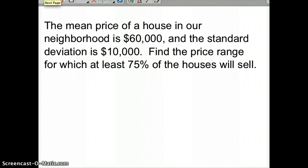The mean price of a house in our neighborhood is around $60,000, and the standard deviation is $10,000. Find the price range from which at least 75% of the houses will sell. And we'll do maybe two of them just to kind of figure this out. So we'll do 75% and 90%.